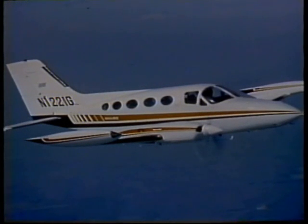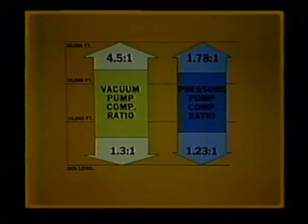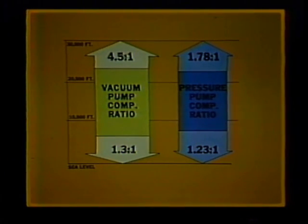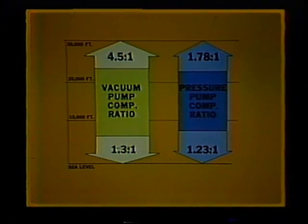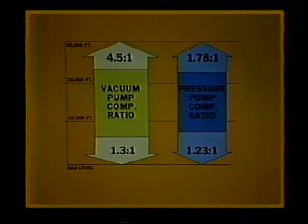However, as aircraft began to fly at higher altitudes, where the air is extremely thin, further changes in aircraft pneumatic systems are again necessary. To illustrate this, at sea level, a typical dry air vacuum pump has a compression ratio of 1.3 to 1. At 30,000 feet, however, its compression ratio is 4.5 to 1.